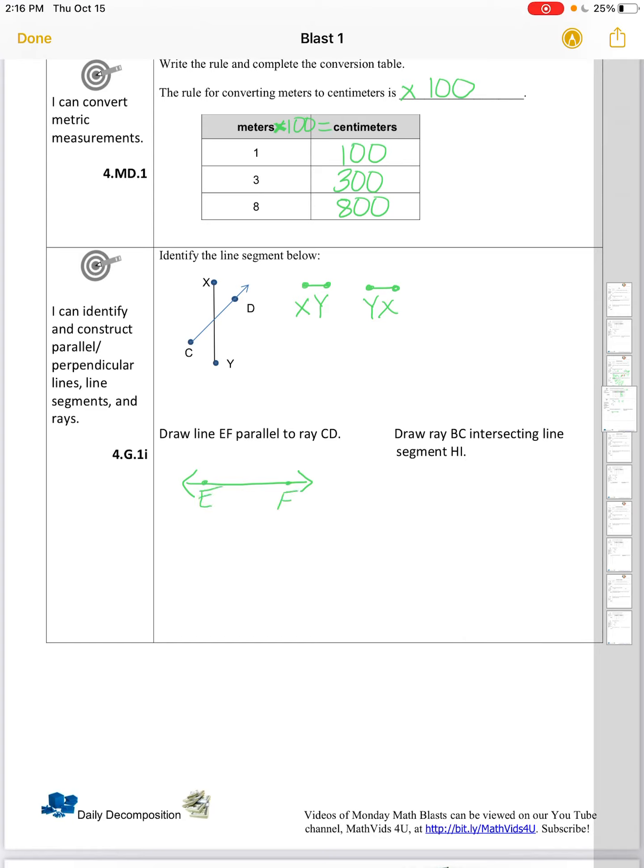And we want that to be parallel. So parallel means no matter how far extended, they're never going to intersect each other. And we're making it parallel to ray C, D. So a ray has an endpoint and extends in one direction to infinity here. And it is important the order in which we place the letters for a ray because both ends are not the same. We want to start with the endpoint, so that's C.